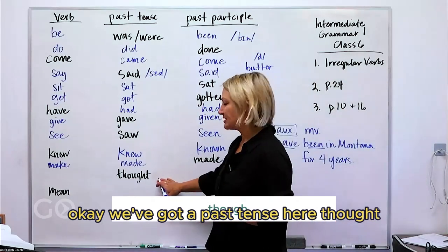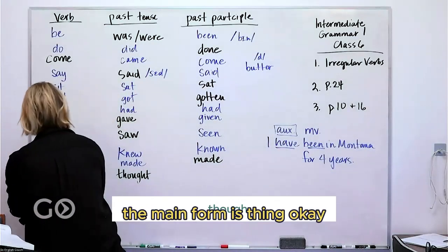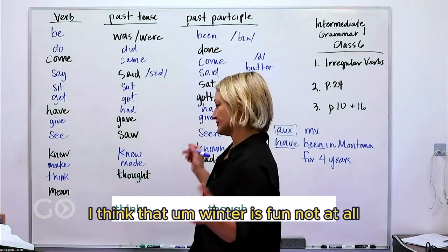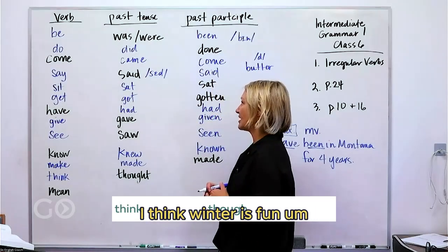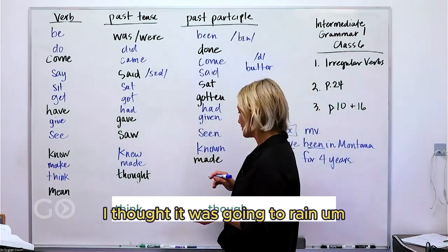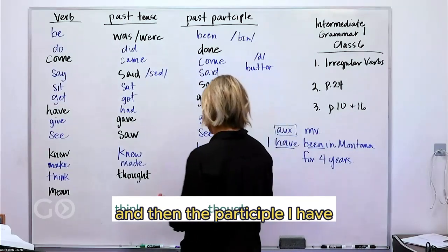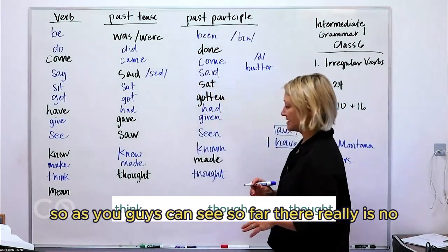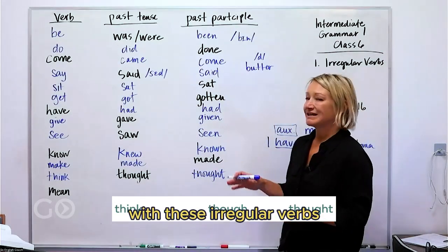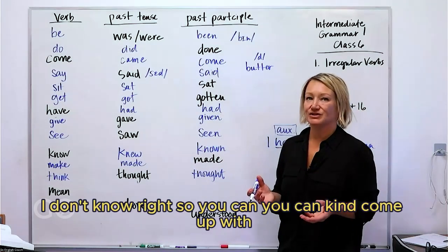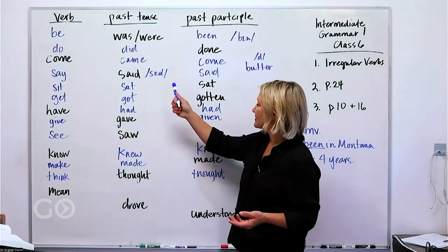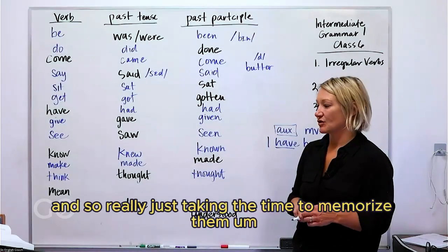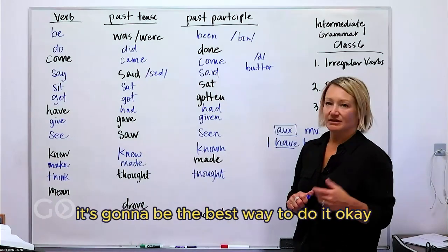The past tense is 'thought' — the main form is 'think.' I think winter is fun. Yesterday I thought it was going to rain. And the participle: I have thought that many times. As you can see, with irregular verbs there really is no pattern. Some like 'gotten,' 'been,' and 'seen' have that '-en' ending, but realistically there's not much of a pattern. Really just taking the time to memorize them is going to be the best way.